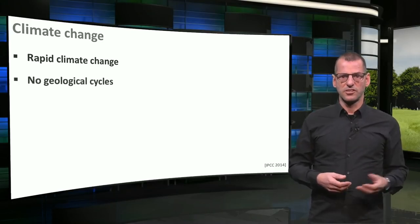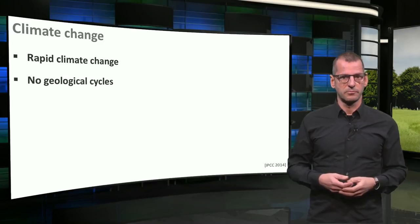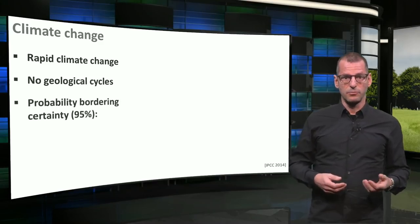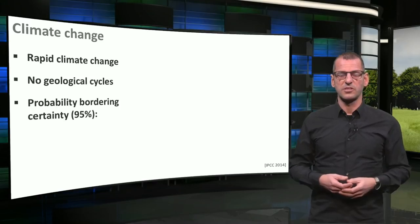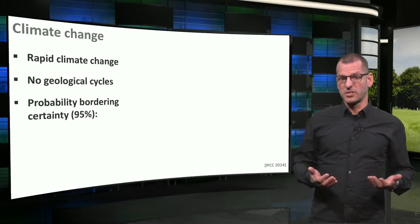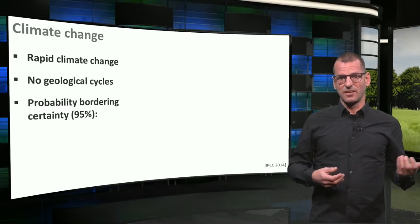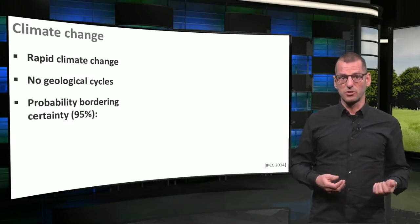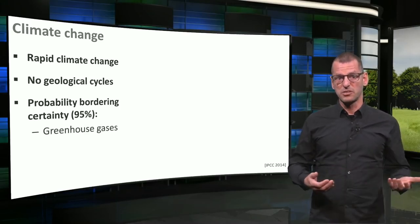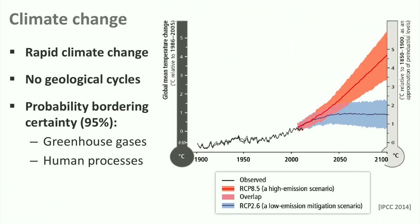Natural causes and geological cycles cannot explain this quick change. With probability bordering certainty, the IPCC, representing thousands of climate scientists, states that the aggravated climate change is caused by greenhouse gases, mostly emitted through human processes. Estimates are varying, but the temperature on earth will most probably rise between 1.5 and 5 degrees within this century, depending on the action taken or not. All scenarios will have consequences, some very severe.